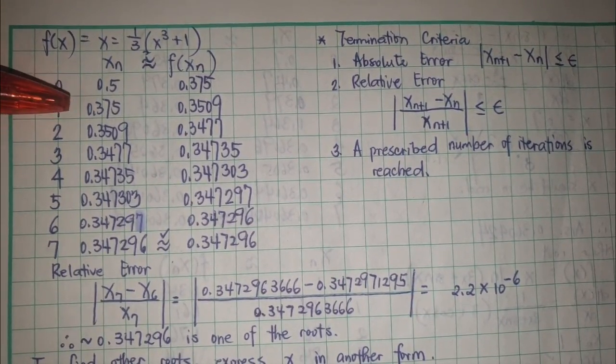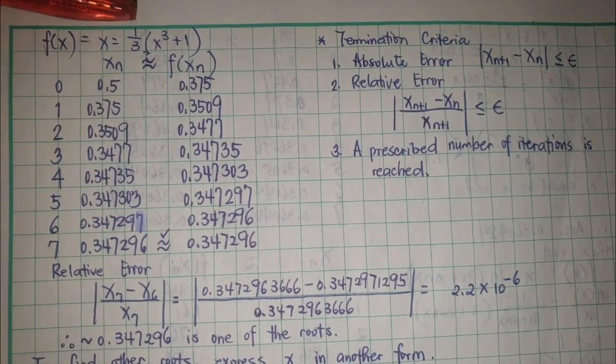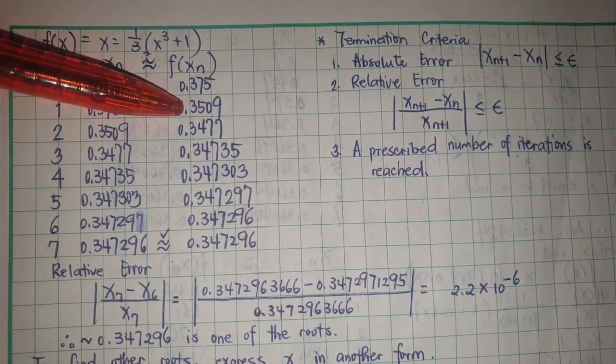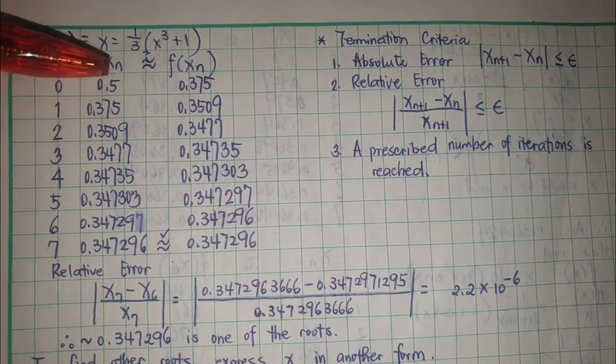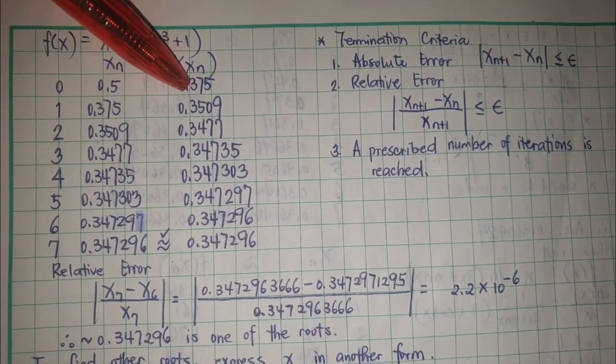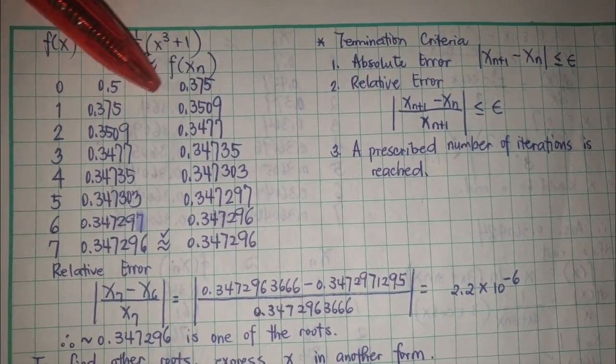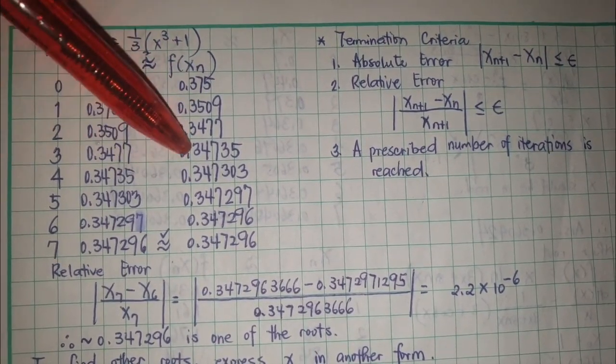If I plugged in 0.375, it would give me 0.3509. The y result here will be the new x's, if you can notice.